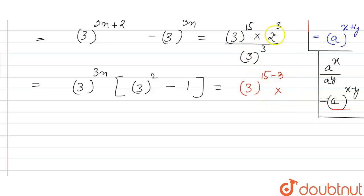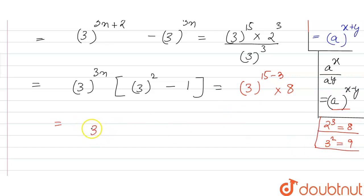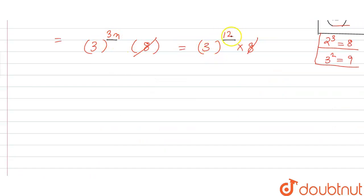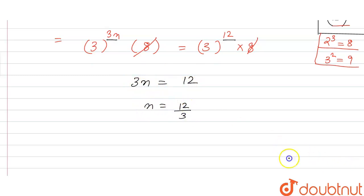Now 2 raised to power 3 is 8, and 3 raised to power 2 is 9, so we have 3 raised to power 3n into 9 minus 1, which is 8, equal to 3 raised to power 12 into 8. This 8 cancels on both sides, leaving 3 raised to power 3n equal to 3 raised to power 12. Since the bases are the same, we equate the powers: 3n equals 12, so n equals 4.